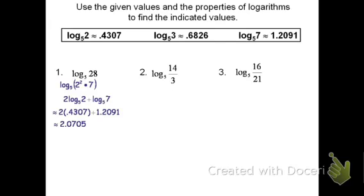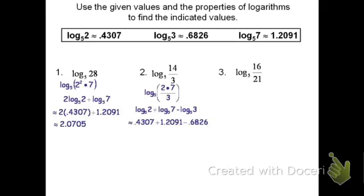In the next one, I see we've got a log of a quotient, so I know I'll be doing some subtraction. I see log base 5 of 3 on the bottom, which I have a value for — about 0.6826. But I don't have 14. However, 14 is 2 times 7, so I really have log base 5 of the product 2 times 7, divided by 3. Setting this up: log base 5 of 2 plus log base 5 of 7, minus log base 5 of 3. I'm adding the pieces from the numerator (2 and 7) and subtracting the denominator piece (3). Substituting and simplifying, the answer is about 0.5712.